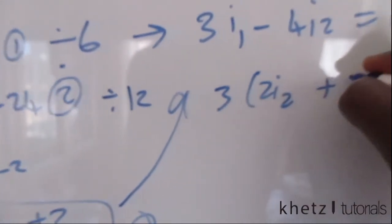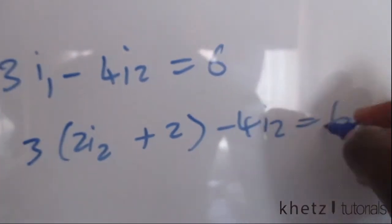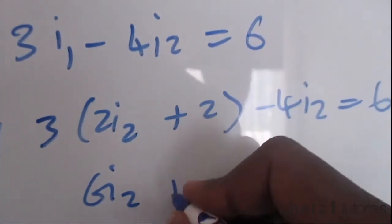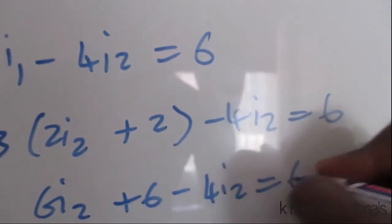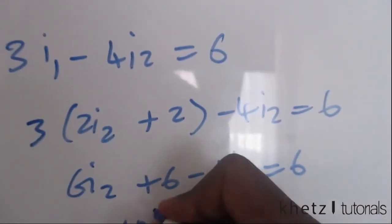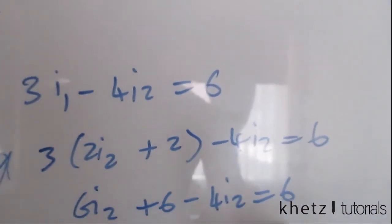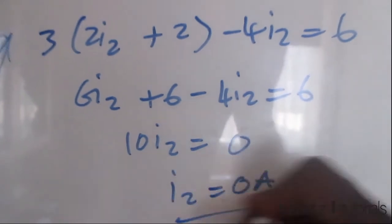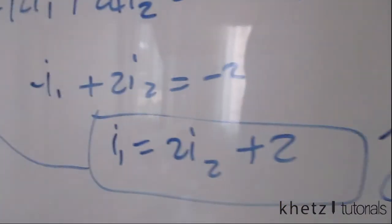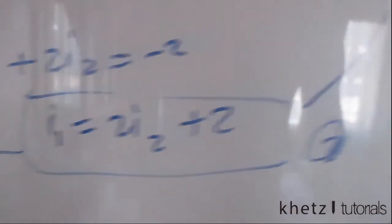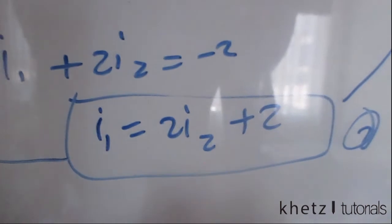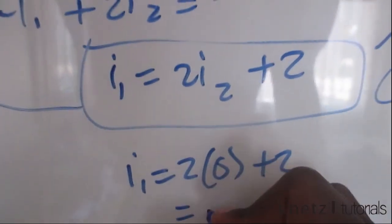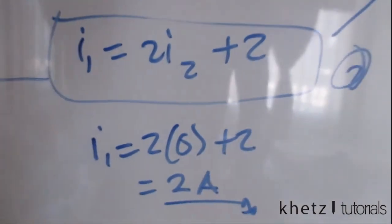Multiplying through: 6i2 plus 6 minus 4i2 equals 6. Adding like terms: 2i2 equals 6 minus 6, which is 0, so i2 equals 0 amperes. Substituting back into i1 equals 2i2 plus 2: i1 equals 2(0) plus 2, so i1 equals 2 amperes. And that is how you solve this problem.